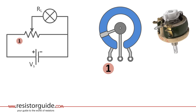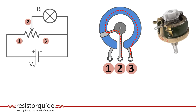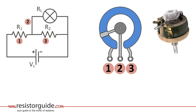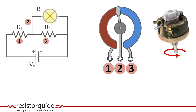We have connected the first terminal to the positive leg, the second to the wiper, and the third one to the negative lead. Now we created in a potentiometer two resistive paths. Basically, we could say that each represents a separate resistor. To make our representation simpler, we replace it with resistor R1 and R2. If we change the position of the wiper, we change the values of resistor 1 and 2.